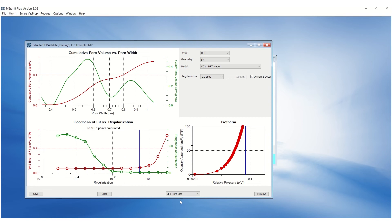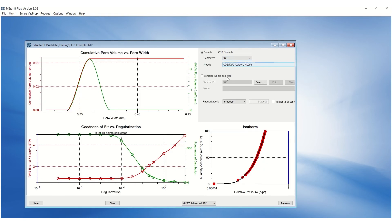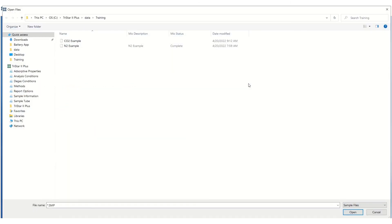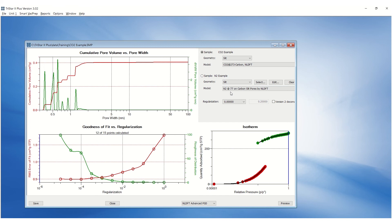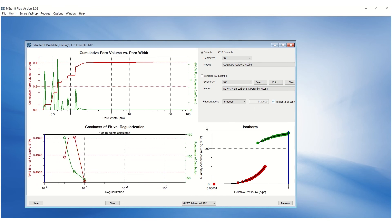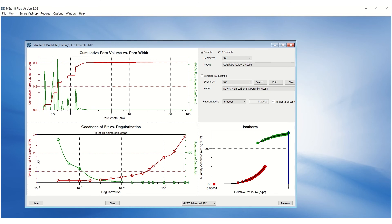If you have a nitrogen and CO2 isotherm on a carbon sample, go to NLDFT Advanced. Load the N2 file and select the model. Select the appropriate geometry and model. Select Version 2 Deconvolution to minimize the roughness. Adjust the regularization to minimize the error and roughness.